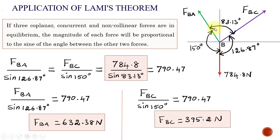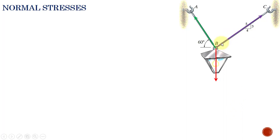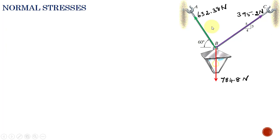We have now calculated the two unknown forces FBA and FBC using Lamy's theorem. Now let us find the stresses acting along rods BA and BC, since the forces along these rods are now determined. The force along BC is 395.2 Newton and the force along AB is 632.38 Newton.